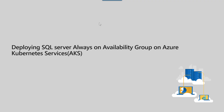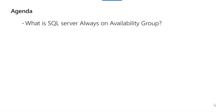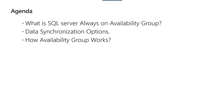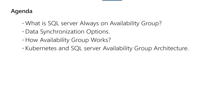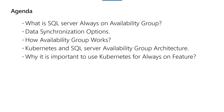In this demo, we will learn how to deploy SQL Server Always-On Availability Group on Azure Kubernetes Services or AKS. Here is the agenda: we will understand what is SQL Server Always-On Availability Group, data synchronization options it provides, and how Availability Groups really work. Then we will understand Kubernetes and SQL Server Availability Group architecture, and why it is important to use Kubernetes for the Always-On feature of SQL Server. Then we will understand the demo solution and how it works.